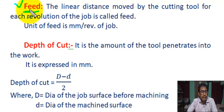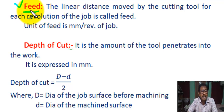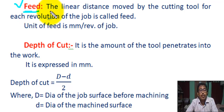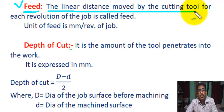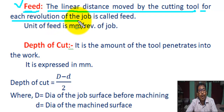Now, what is feed in lathe? It is the distance moved by the tool along the bed per rotation of the job. Feed in lathe is the linear distance advanced by the cutting tool in one revolution of the workpiece. So the longitudinal distance moved by the cutting tool for each revolution of the job is called feed.